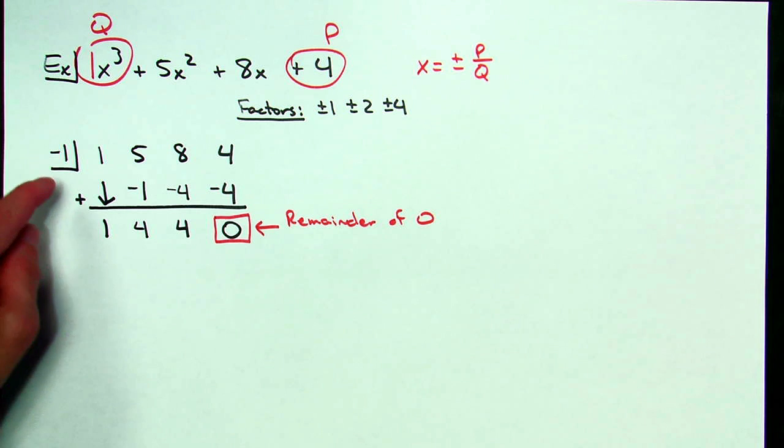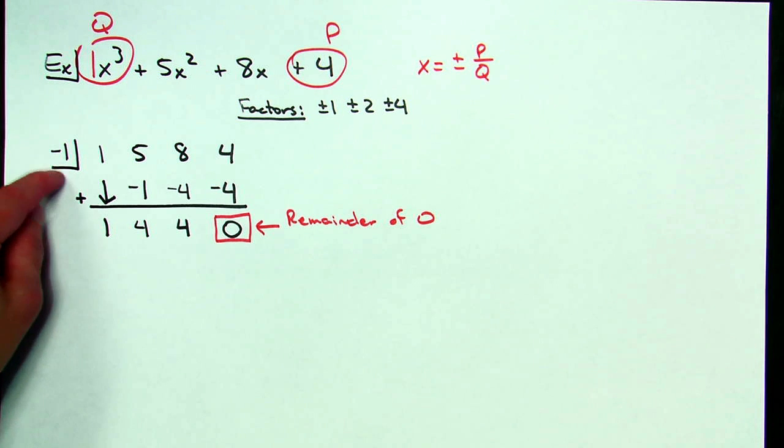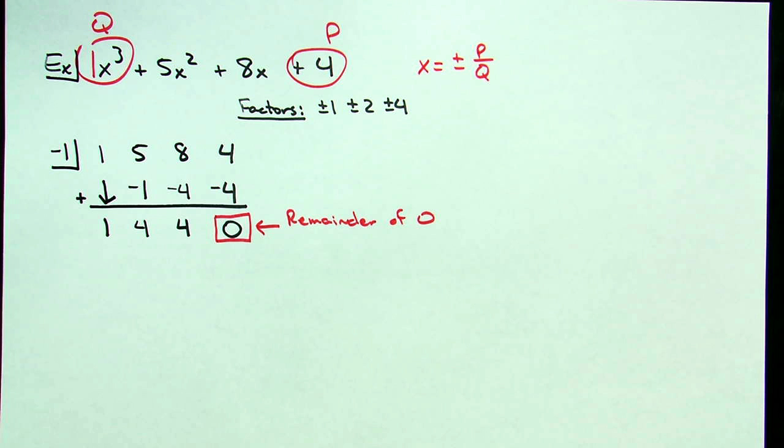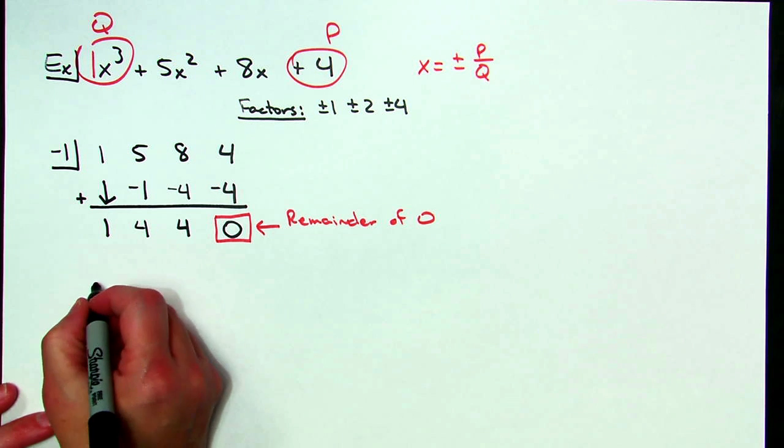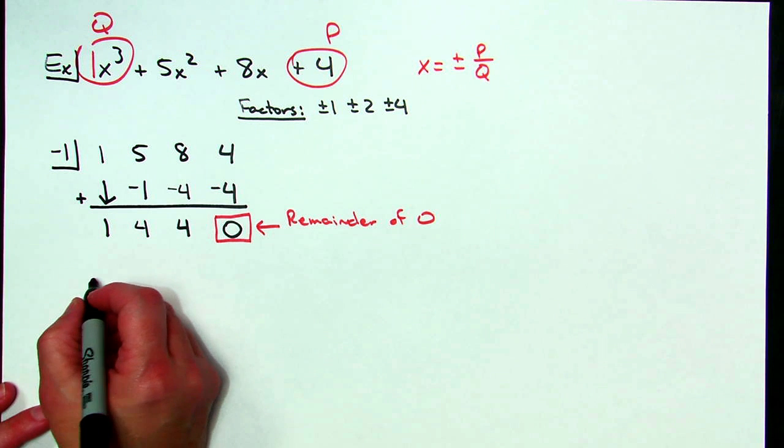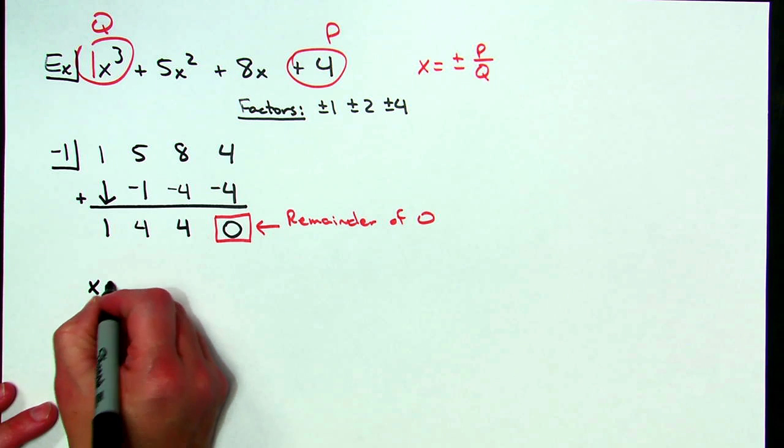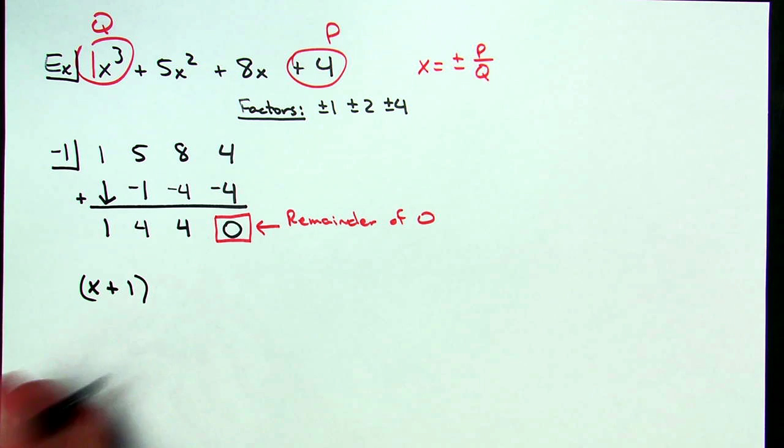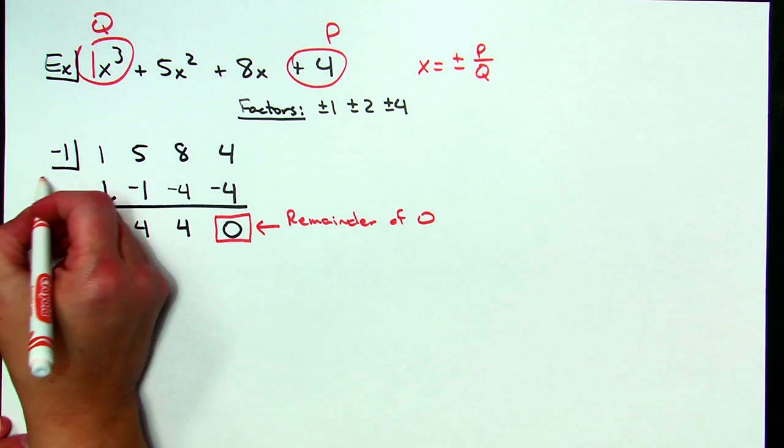What this does is this tells me then that negative one is a root. If negative one is a root then a factor of that polynomial expression would be x plus one. Negative one is a root.